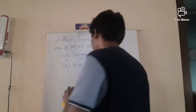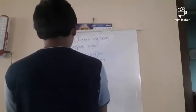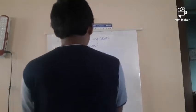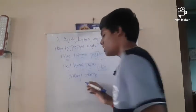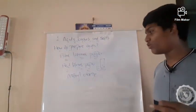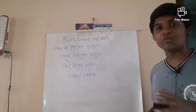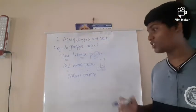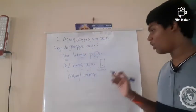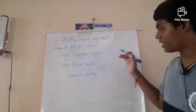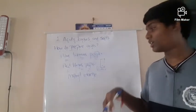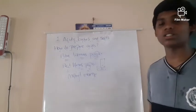Methyl orange indicator: when methyl orange is kept in acidic medium, it changes into red color, similar to blue litmus paper. When methyl orange turns red, the substance is concluded to be an acid.